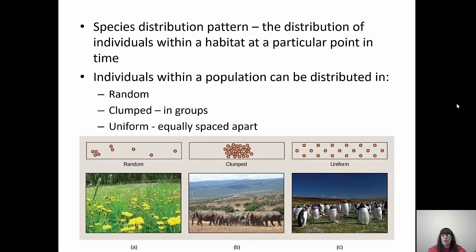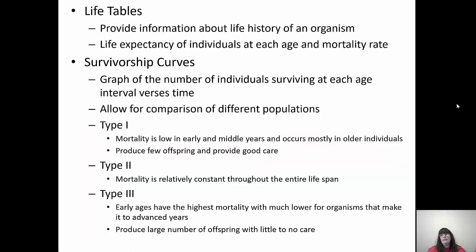Species can be distributed in a variety of ways. Their distribution pattern is how they are distributed in their particular habitat at any given point in time. There are three different ways individuals can be distributed. Random is the first — they're just randomly all over the place. You'll find this with trees and plants that have windblown seeds, because the seeds randomly land wherever the wind takes them. They can be clumped in groups — schools of fish or herds, for example. And then there's uniform, where they're equally spaced apart. Penguins have a uniform distribution — if one penguin gets too close to another, they'll actually hit them to space out further.